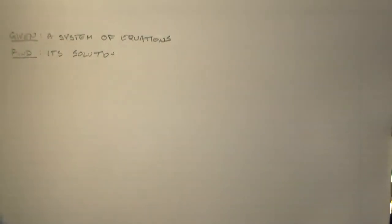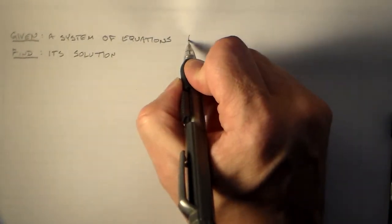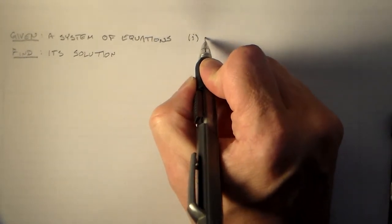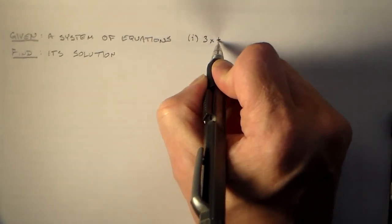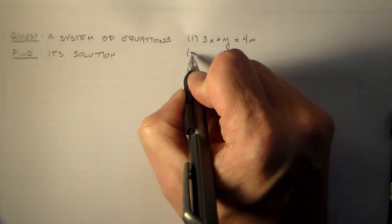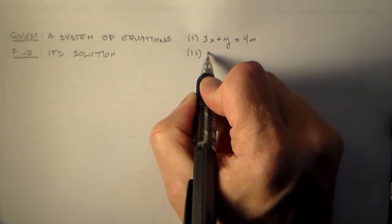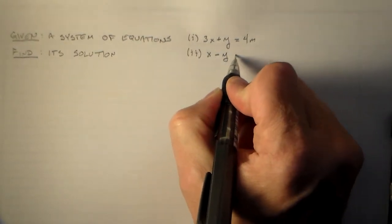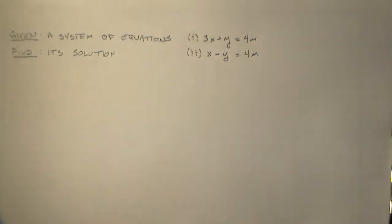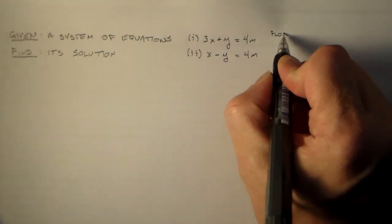We're going to be given a system of equations and we'll want to find its solution. In this case, the system of equations is equation 1 being 3x plus y equals 4 meters, and 2 having x minus y equal to 4 meters.